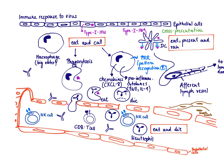Otherwise, there are actually a lot of similarities in the response to a virus compared to a bacteria. We also have our macrophage sitting in the tissue, which is going to eat up viral particles via phagocytosis. The slogan of the macrophage is 'eat and call' — eating up stuff and calling for help from local friends. The macrophage also detects the virus via its pattern recognition receptors (PRRs) and reacts with the production of pro-inflammatory cytokines like TNF and IL-1, and chemokines like CXCL8.